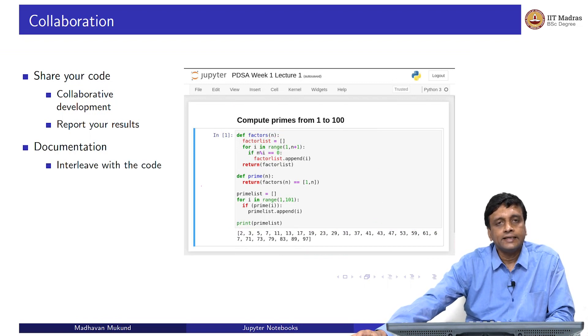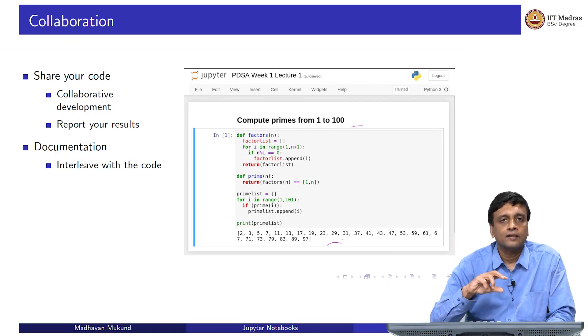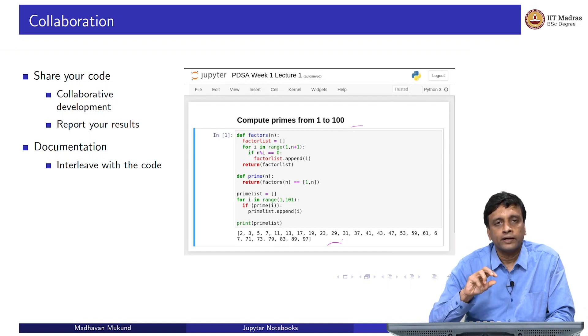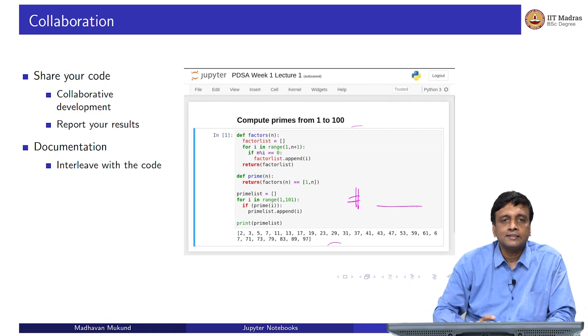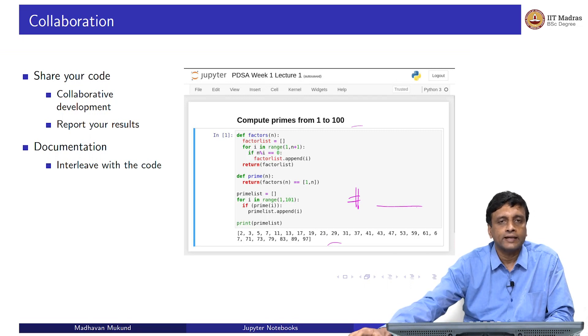The documentation is interleaved with the code. You have the documentation here, you can have more documentation. In between your code fragments, or different parts of your code, you can introduce documentation without looking at it in the comment section of a Python program. In Python, of course, you can include comments by writing this hash, and then writing something after that. But this does not look very neat. And it is also very difficult to format. The idea of this notebook is that you can actually format your text, and interleave it with the code so that it looks readable.